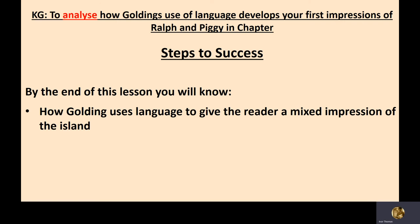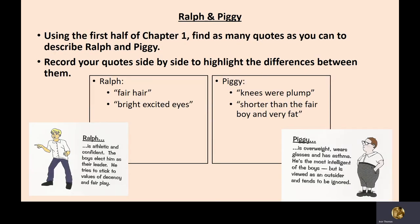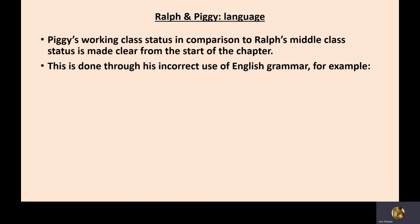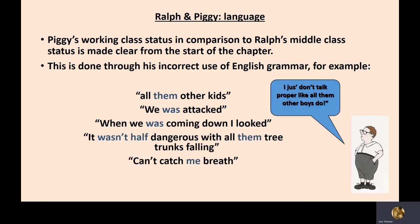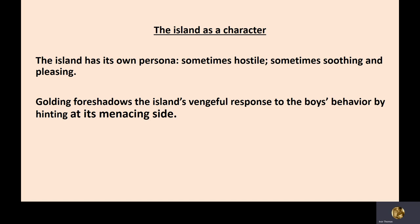Today we're going to look at how William Golding gives us a mixed impression of the island — specifically the impression that there's something menacing about it. You've already looked at Ralph and Piggy: Ralph, athletic and fair-haired; Piggy, not athletic and not as classically attractive. You listed some quotations and looked at Piggy as a working-class victim of bullying from the middle-class character Ralph, including his language: 'them other kids,' 'we was attacked,' and the symbolism of the island.